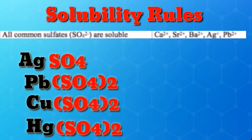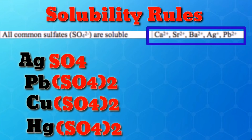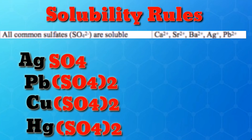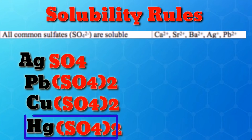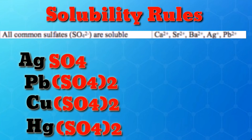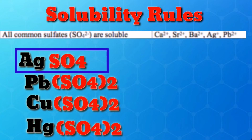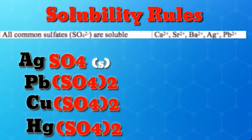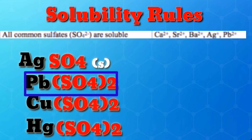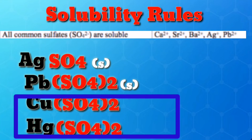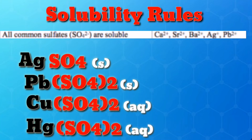Rule 8: Most sulfate salts are soluble. Important exceptions include calcium, barium, lead, silver, and strontium. Let's identify which are soluble and insoluble: silver sulfate is insoluble (silver is exempted). Lead sulfate is also insoluble (lead is exempted). However, copper sulfate and mercury sulfate are soluble because they are not exempted from the sulfate rule.